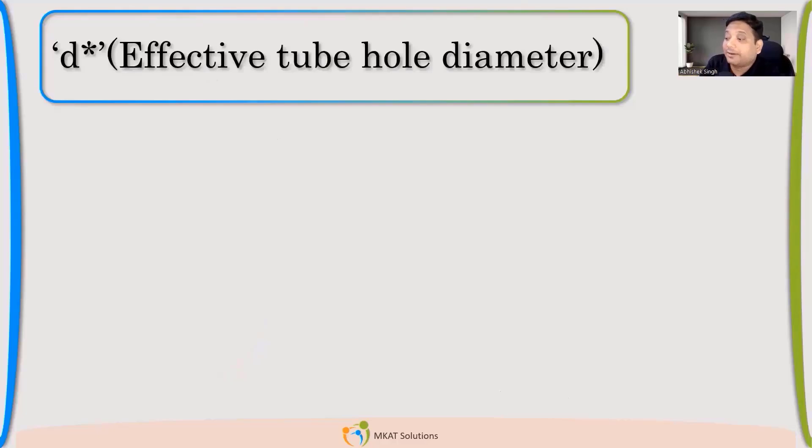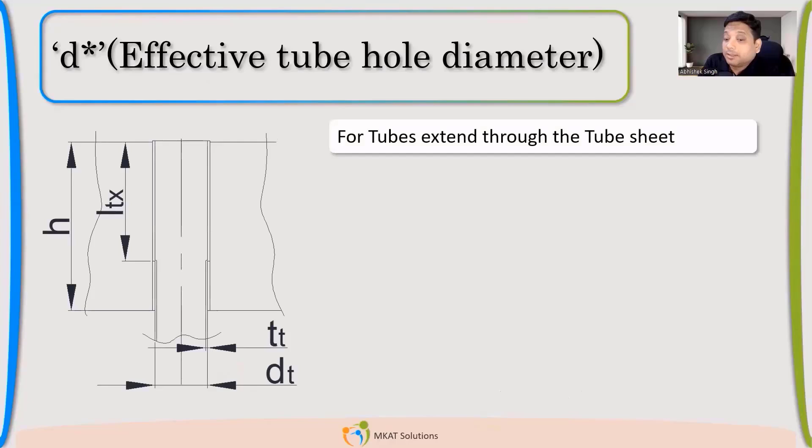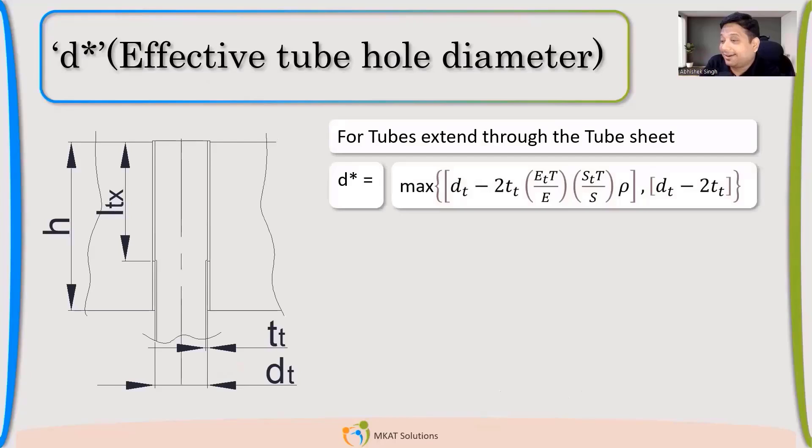Now just try to calculate the effective dimensions. So first we calculated the normal dimensions. Now we'll try to calculate the effective. So for tubes extended through the tube sheet, the d* is calculated like this. Now, DT minus 2t, which is your actual d, the inner diameter.